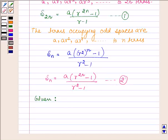So, given that the sum of all the terms is 5 times the sum of terms occupying odd places, we have S_(2N) = 5S_N.